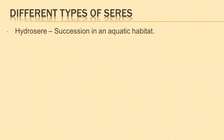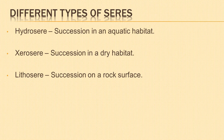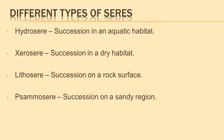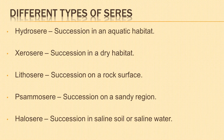Let us look into the different types of seres. Hydrosere is succession in an aquatic habitat. Xerosere is succession in a dry habitat. Lithosere is succession on a rock surface. Samosere is succession on a sandy region. Halosere is succession in saline soil or saline water.